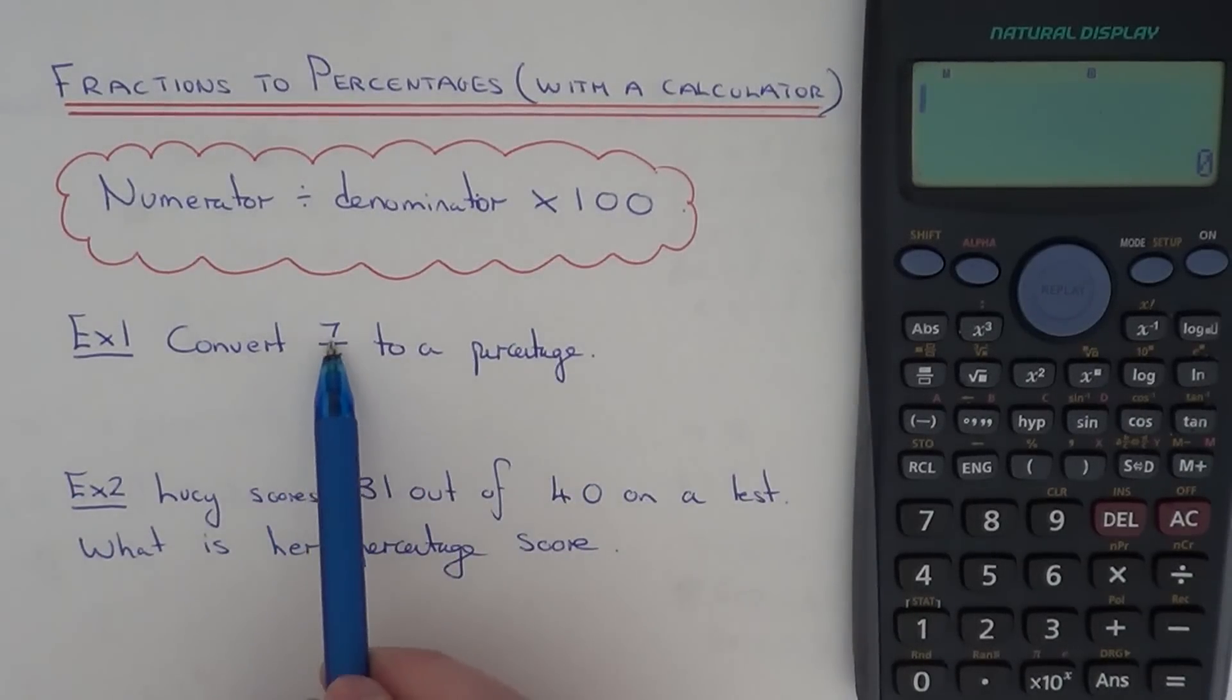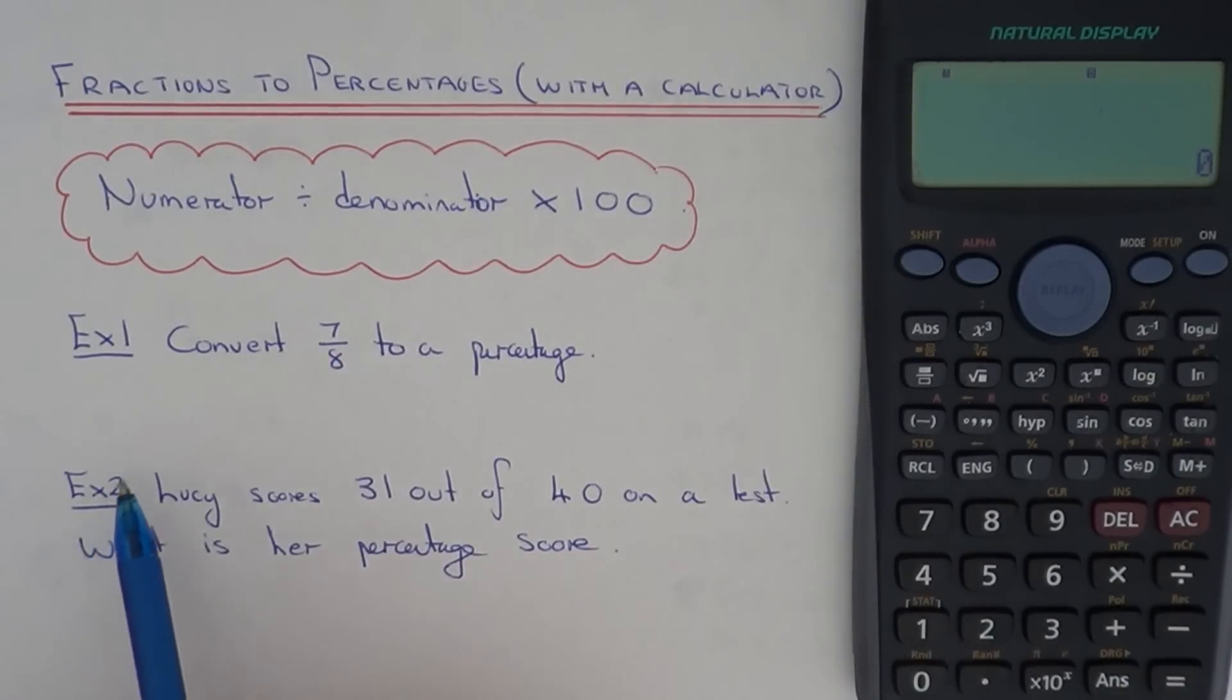The reason for this is because the line which separates the numerator and denominator means divide. So let's take a look at example 1. We've got to convert 7 eighths into a percentage.